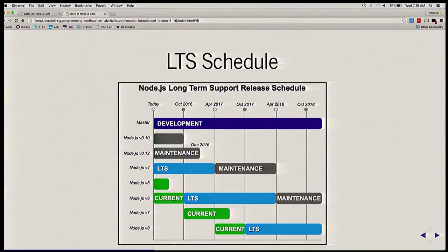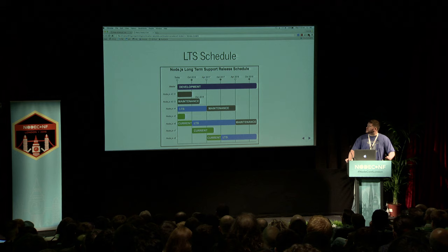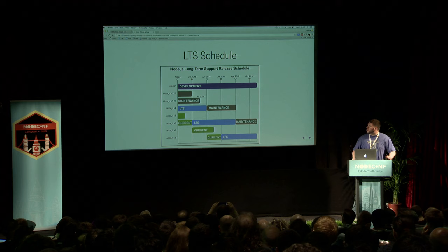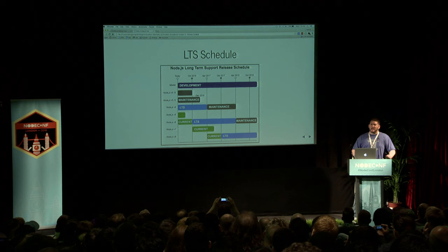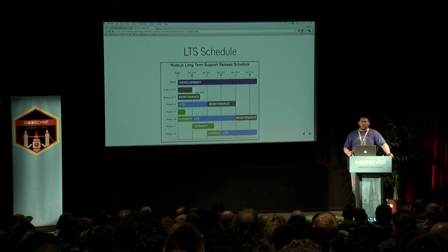There's a picture that makes this a little less confusing. At the very top, we have the master branch where all current development goes on in Node core. Then we have Node 0.10 and 0.12, which were grandfathered in. By the end of the year, they will end their maintenance and be completely end of life — so if you're still using one of those, you should definitely update. Then there's V4, which according to the LTS policy was supposed to have six months before going into official LTS mode, but because it was a corner case with a brand-new LTS policy, it got in after about a month. So it's currently the LTS version. In April of next year, it will go into maintenance mode for a year.